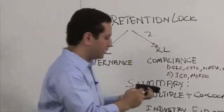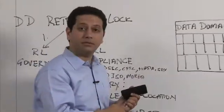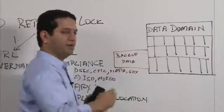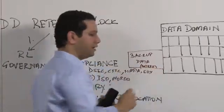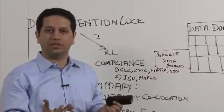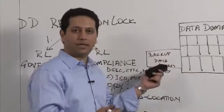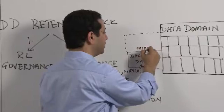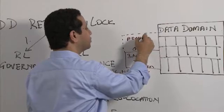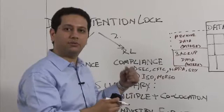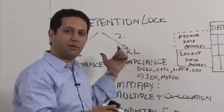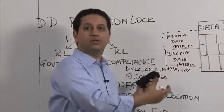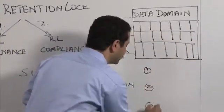Let's look at Retention Lock software in the context of a data domain system. You may already be using a data domain system for your backup data needs with an MTree — a logical partition carved out of the data domain file system namespace. You can take another MTree or logical partition and write archive data to it. That archive data is the primary copy tiered off from your primary storage by the archiving application. Now let's look at the key features of Retention Lock software — there are three I want to highlight.